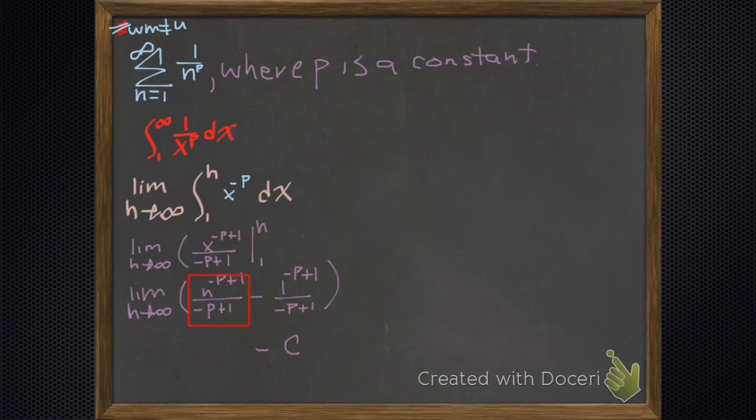So then we run that limit, and it's only going to converge if our infinity is in the denominator, and our infinity is in the denominator if -p+1 is smaller than 0. So we find out what our p is. Our p must be bigger than 1.